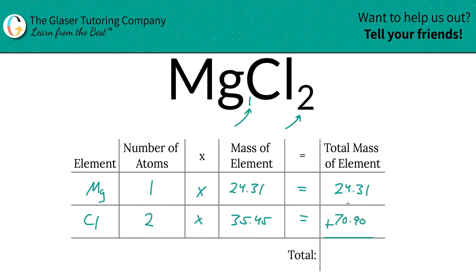And then to find the total mass of the entire compound, simply just add this column up. And it works out to be 95.21. Since we're solving for molar mass, the units here are in grams per mole.